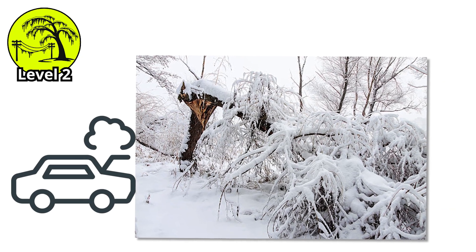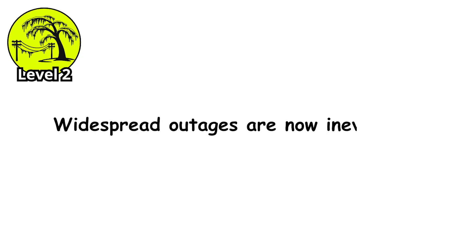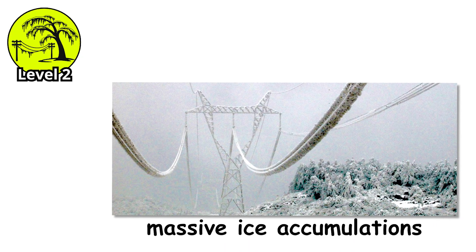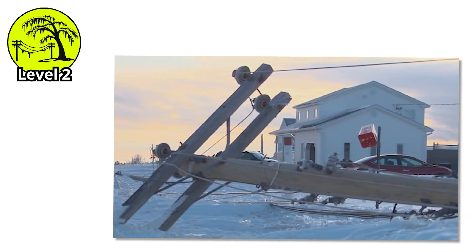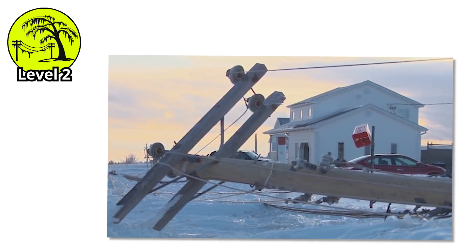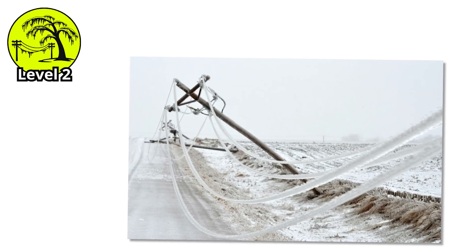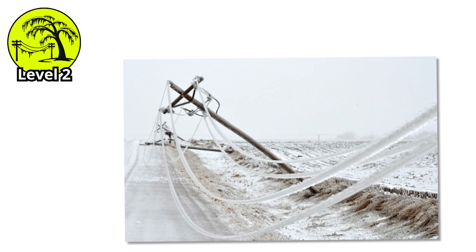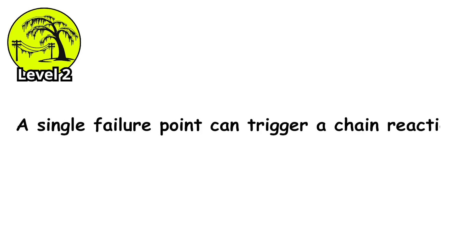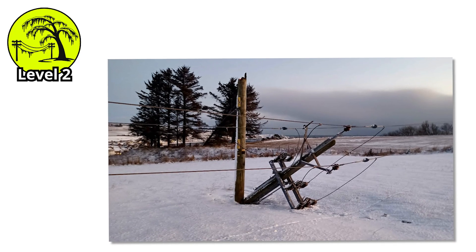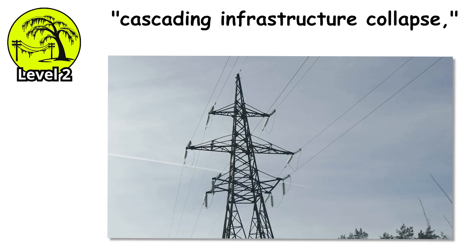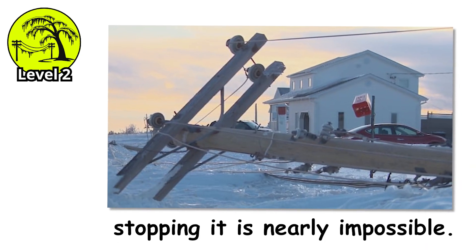The sound is horrific — a deep groaning followed by explosive cracking. These falling trees take down power lines, crush cars, and collapse onto homes. Widespread outages are now inevitable. Utility poles suddenly have to support massive ice accumulations they were never engineered for, and the poles themselves start snapping like breadsticks. When a utility pole goes down, it can take out entire distribution lines affecting thousands of customers. The cascading effect is what makes this so dangerous: one pole fails, increasing the load on adjacent poles, which then fail in sequence like dominoes. A single failure point can trigger a chain reaction that blacks out entire neighborhoods in minutes. Utility companies call this cascading infrastructure collapse, and once it starts, stopping it is nearly impossible.